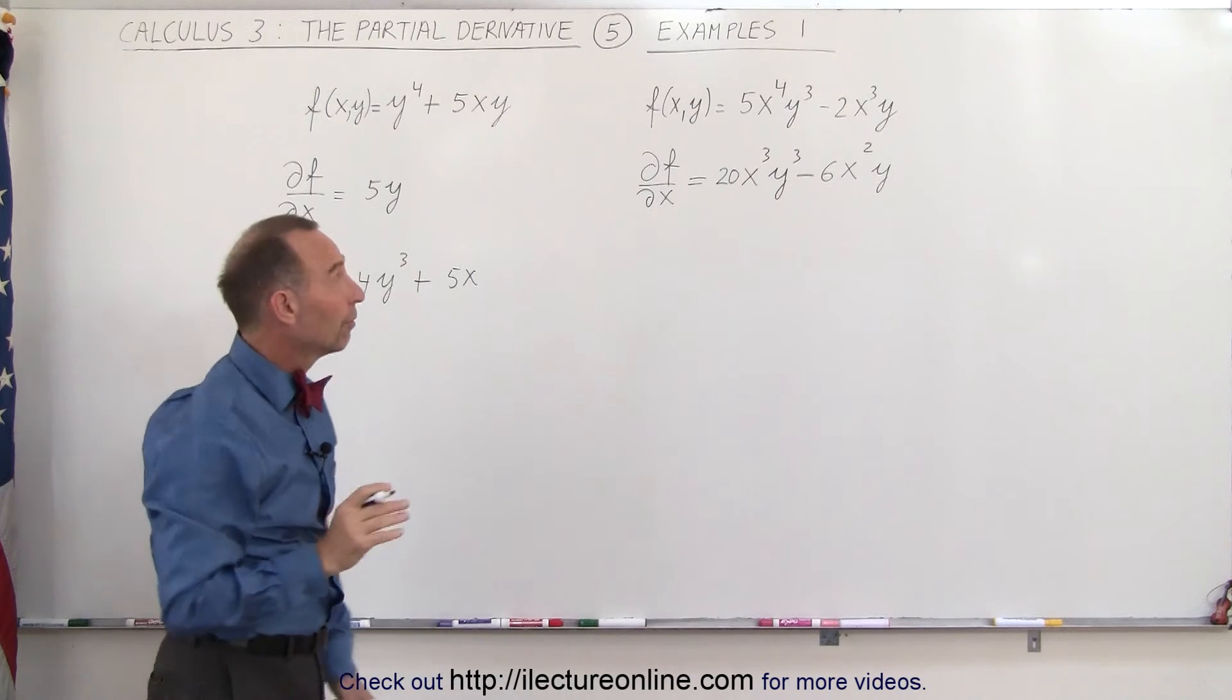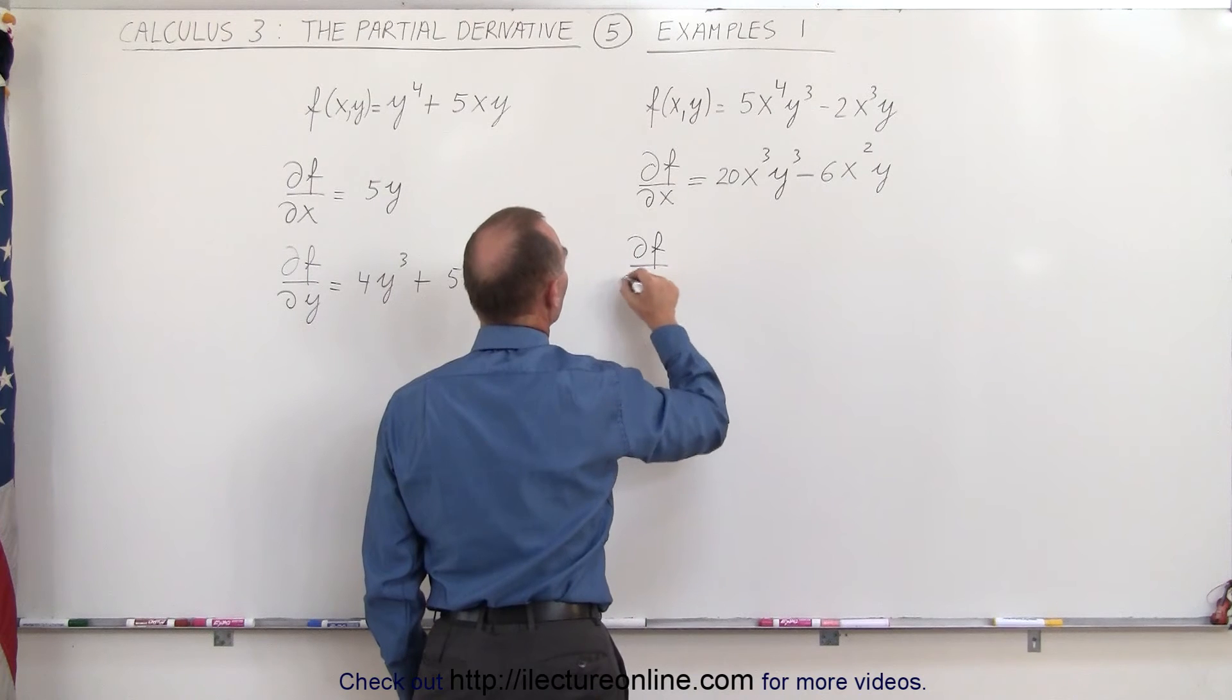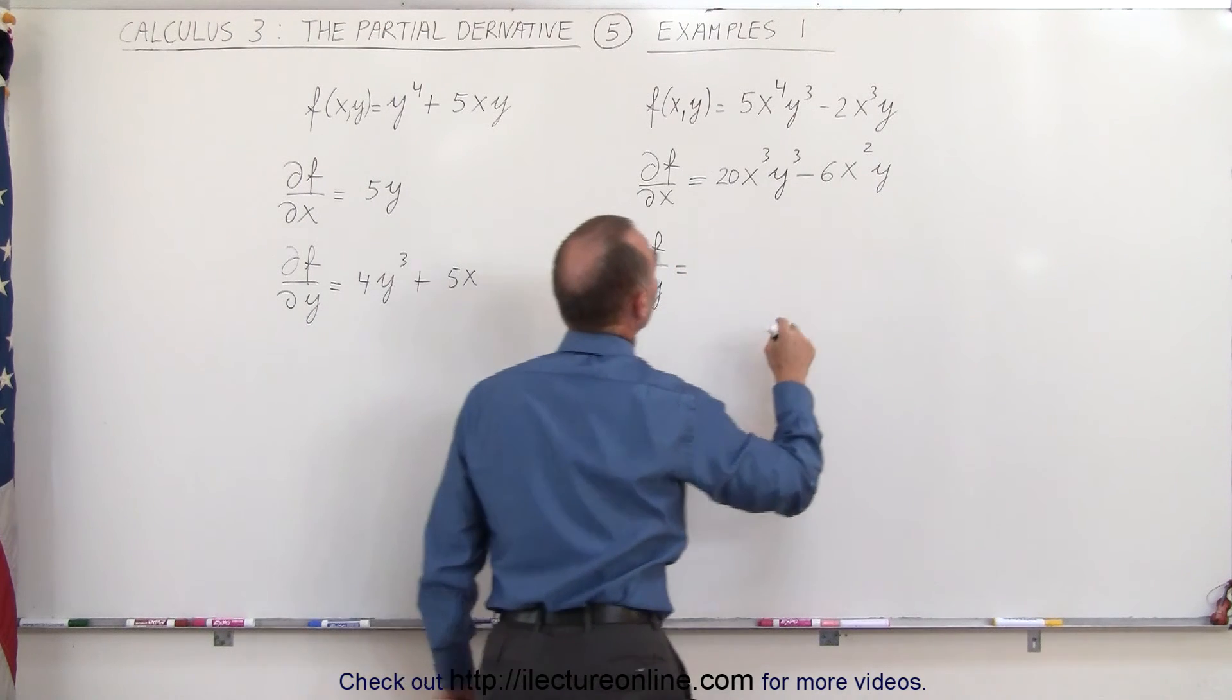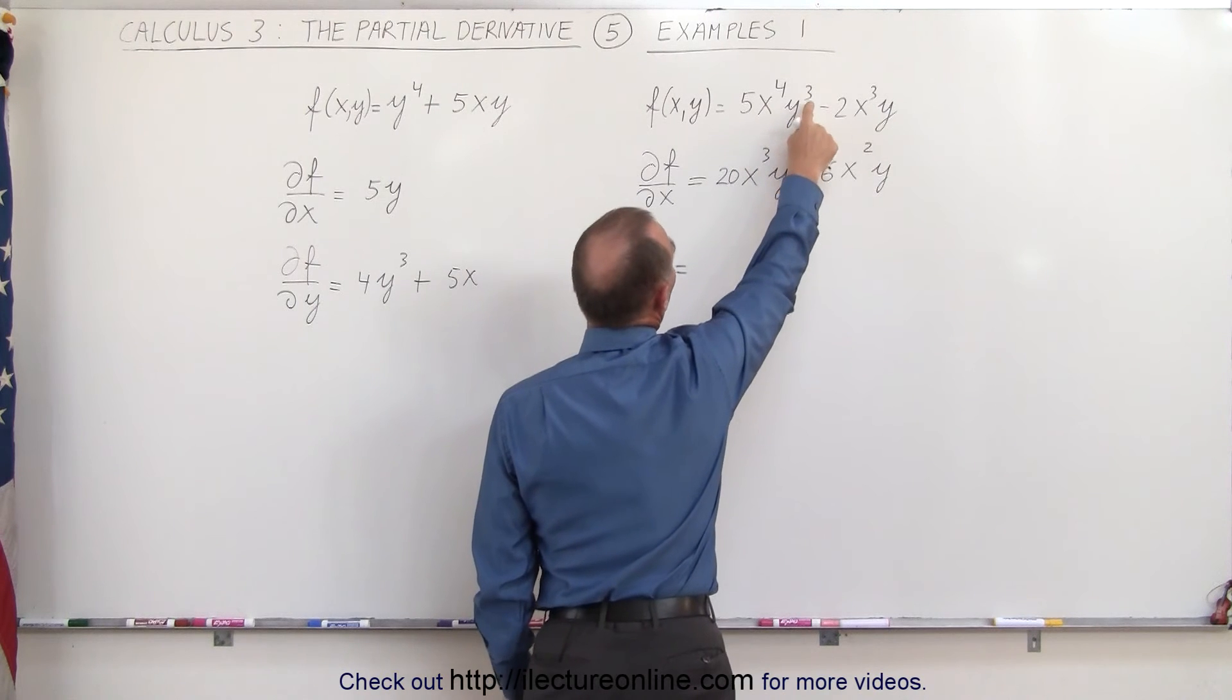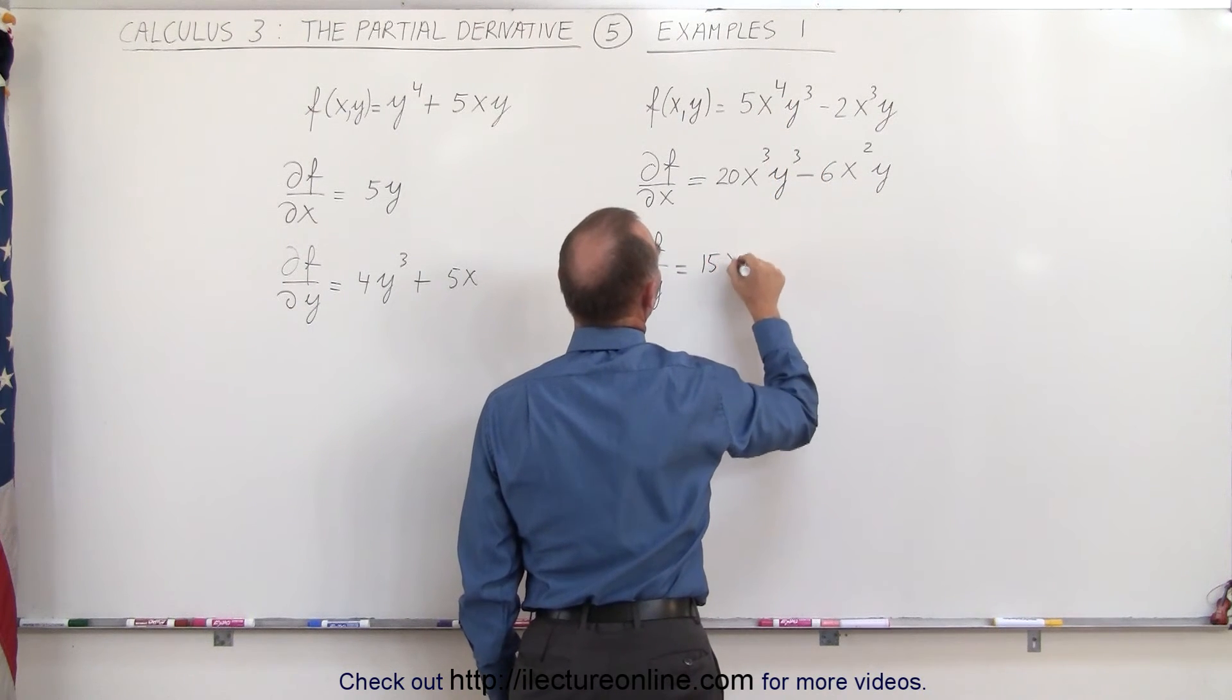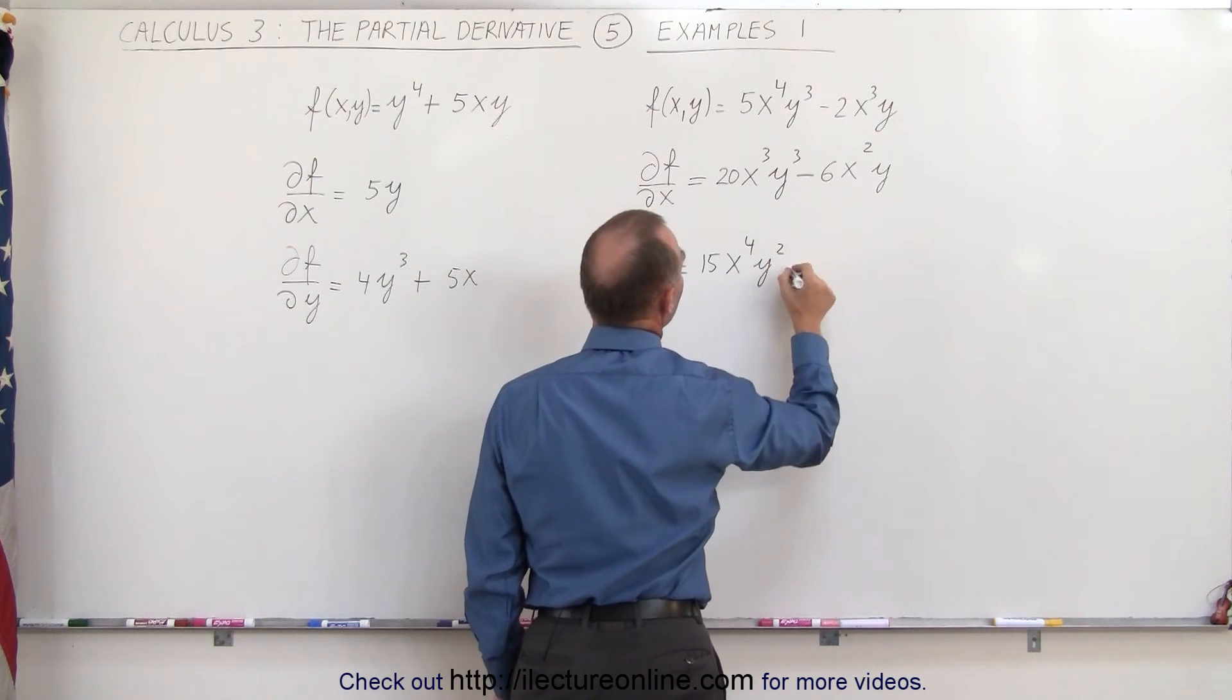Now let's take the partial derivative of the function with respect to y. The partial of f with respect to y is equal to... Notice that this now becomes the variable. This is the constant, so we have 3 times 5, which is 15. x to the 4th remains the same. y squared minus,